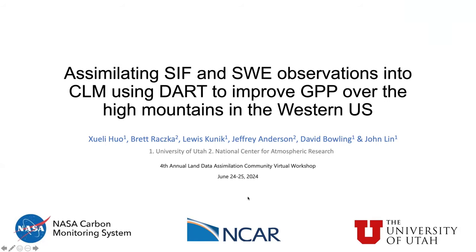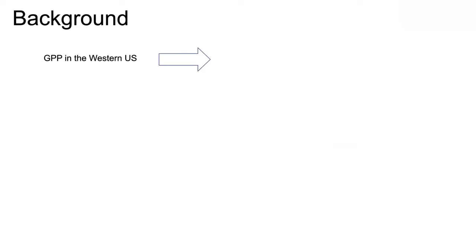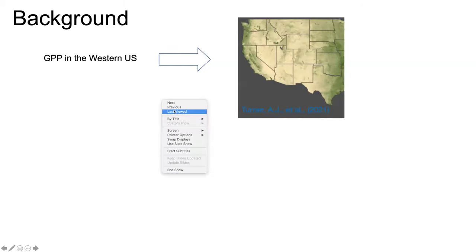Thanks for the introduction. So starting from the background: gross primary productivity (GPP) is the amount of carbon absorbed by plants from the air during a certain amount of time, and it matters for global warming because it influences the amount of carbon in the atmosphere.